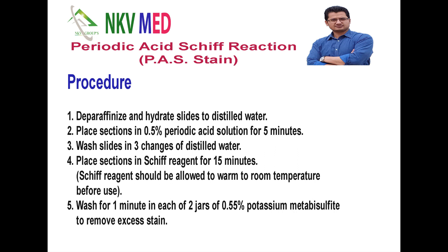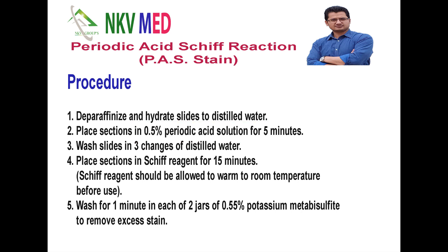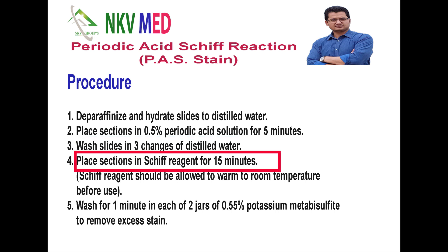The procedure for PAS stain: take one section, first deparaffinize and hydrate the slide to distilled water. Then place the section in 0.5% periodic acid solution for 5 minutes — according to the principle, all aldehyde groups will get exposed. Wash the slide in three changes of distilled water. After that, put the Schiff reagent for 15 minutes — the exposed aldehyde will bind to the Schiff reagent and give color.